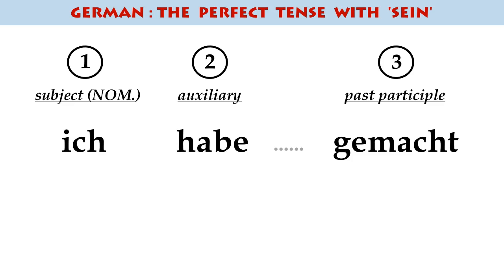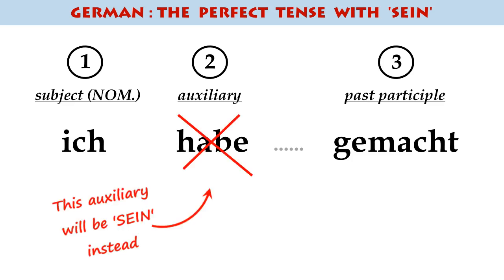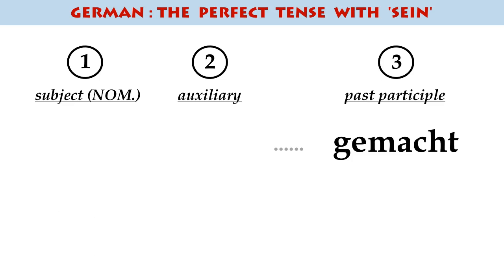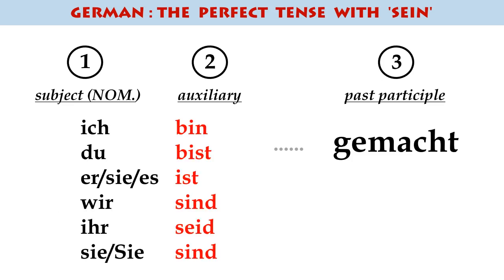But there are just a small number of verbs which don't use haben — basically in the middle of the construction. They don't use that verb as the auxiliary. They use the verb sein, which means 'to be'.